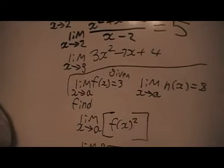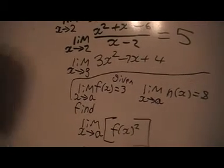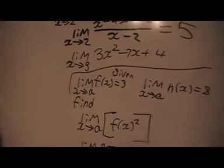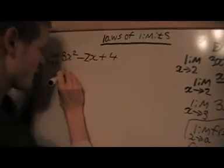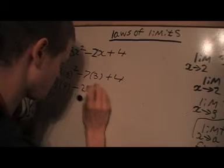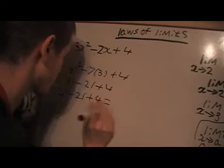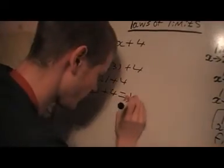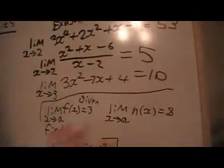So now we're going to do this one using the theorem that I told you before. We're just going to substitute 3 in here and see what we'll get. So we get 3 times 9 minus 21 plus 4, so that's going to be 27 minus 21 plus 4, which is going to be 6 plus 4 which is going to be 10. So the limit of this one here is going to be 10.